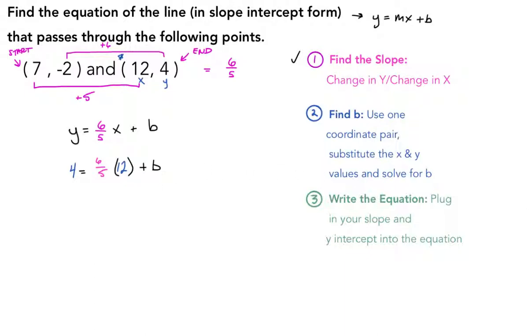6/5 times 12—12 written as a fraction is 12 over 1—so we're going to do 6 times 12, which is 72 over 5, plus b. This is equal to 4 on the left-hand side.